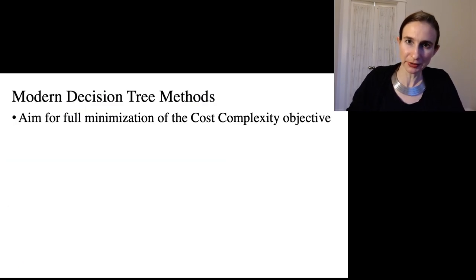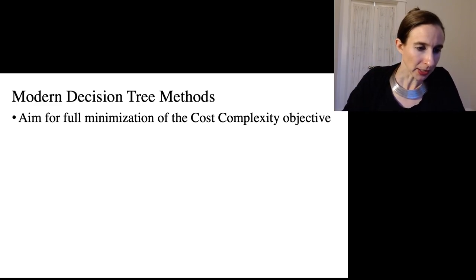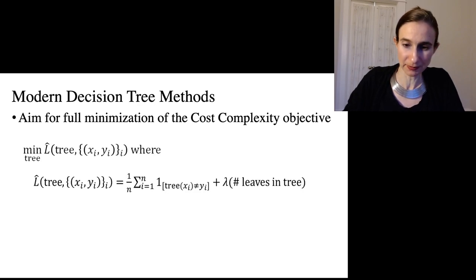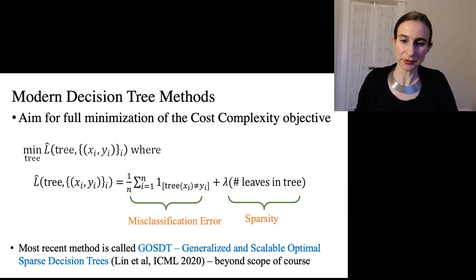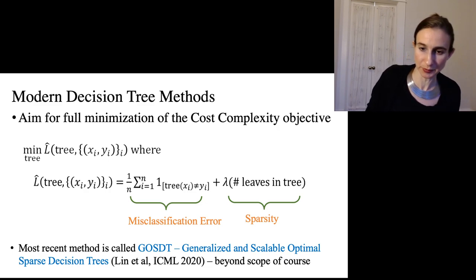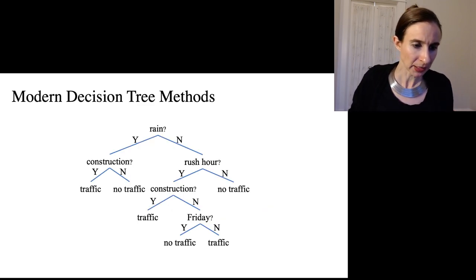Okay, so modern decision tree methods don't have any of these issues. They have different issues, right? The only issue with the modern decision tree methods is scalability, because they're trying to fully optimize over this massive, massive space. Okay, so they aim for full minimization of the cost complexity objective, which is the same cost complexity objective we went over before. So this is the fraction of misclassified points traded off with the number of leaves in the tree. So it's misclassification error regularized by sparsity. Now the most recent method as of spring 2020 is called GOSDT. It's generalized and scalable optimal sparse decision trees. And the algorithm itself is very, it's really complicated and so it's beyond the scope of the course. But I want to give you a sense of what it is, just so that you know that you're up to date on decision tree construction.